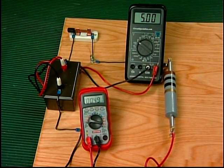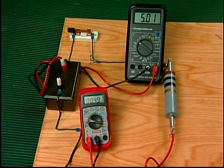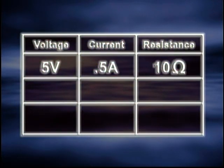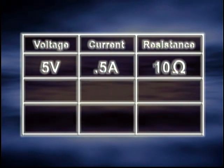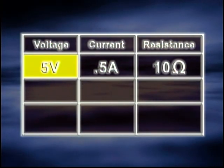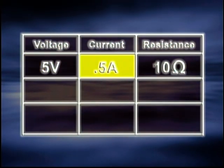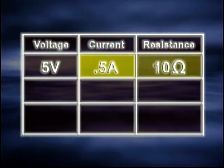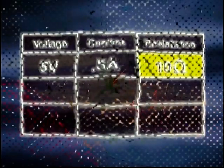With the source at approximately 5 volts, the ammeter indicates 0.5 amperes and the voltmeter reads 5 volts. To keep an accurate account of our meter readings, all data should be recorded in table form. The voltage is 5 volts, the current is 0.5 amperes, and the resistor was 10 ohms.